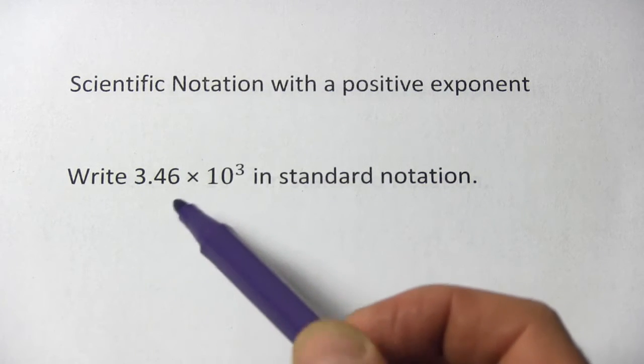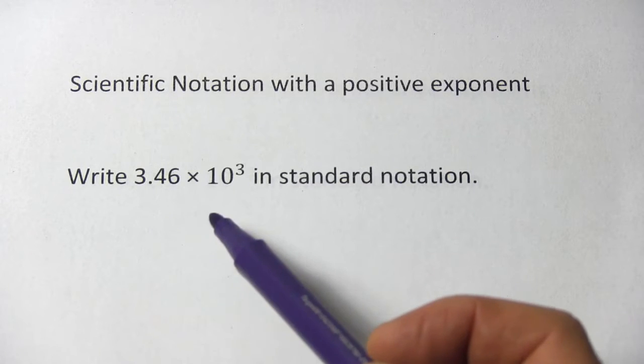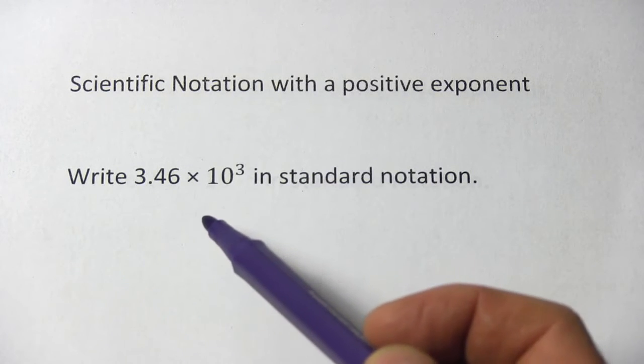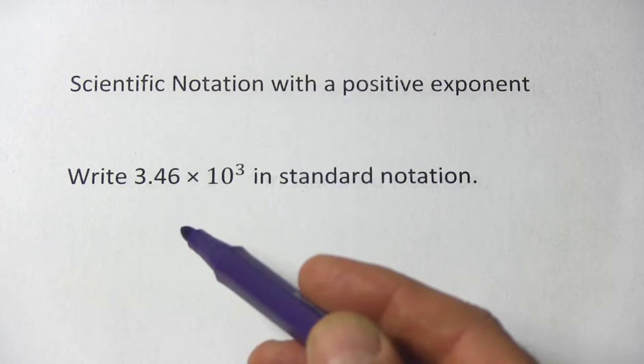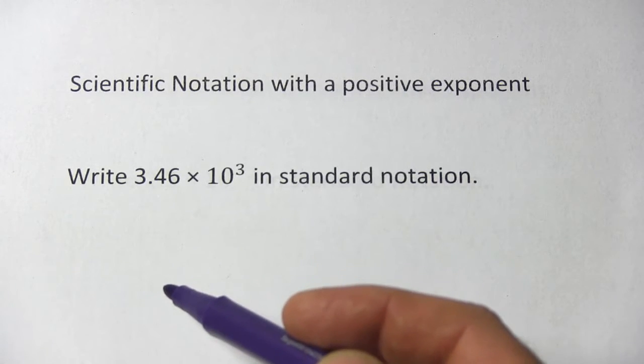Scientific notation is really useful when you're dealing with numbers that are really big or really small, like scientists often have to do when they're looking at the distances between stars or the width of an atom.